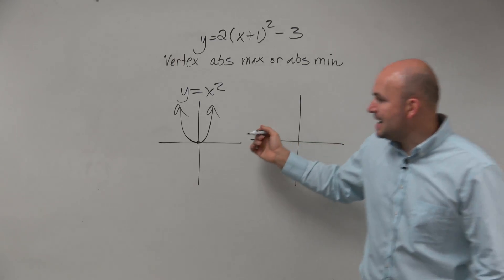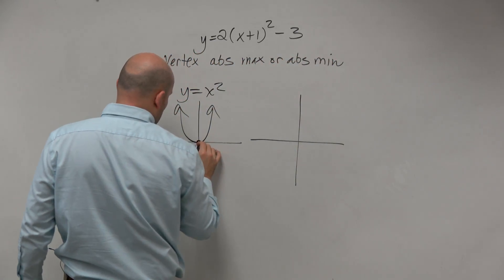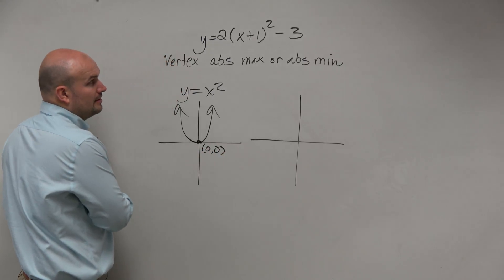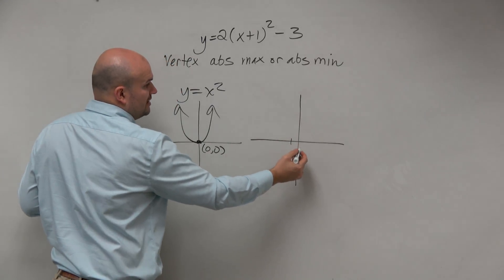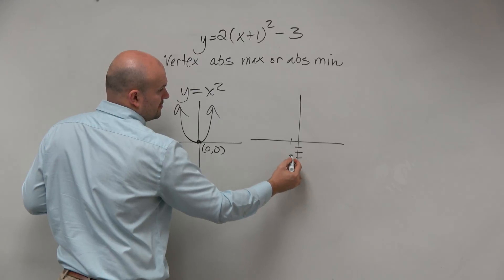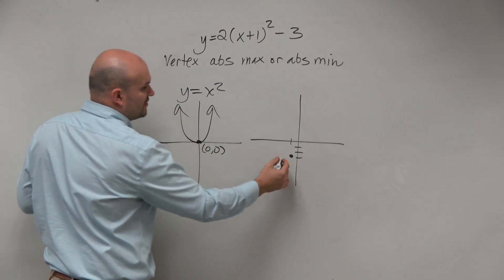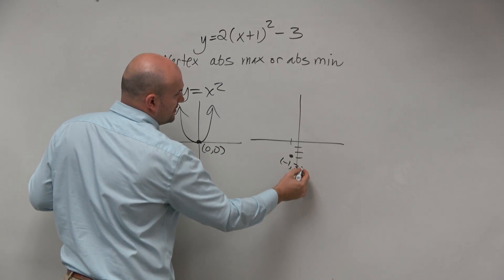So right now, the vertex with no transformations is at 0, 0. But if I shift it left one and then down three, that's my new vertex, which is negative one, negative three.